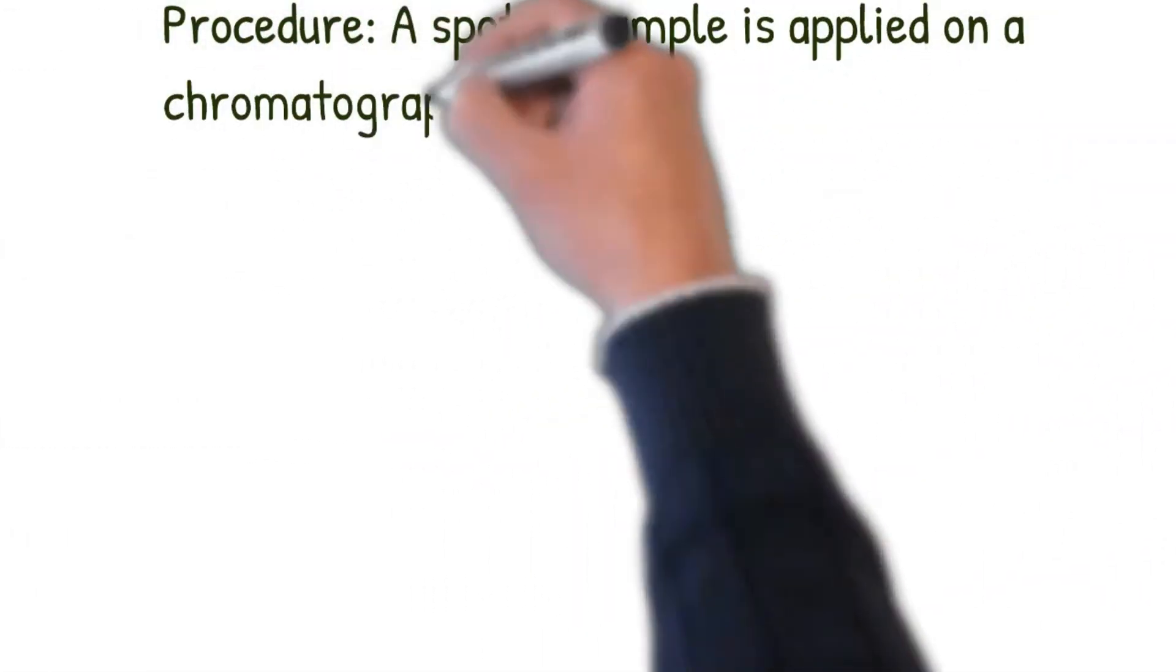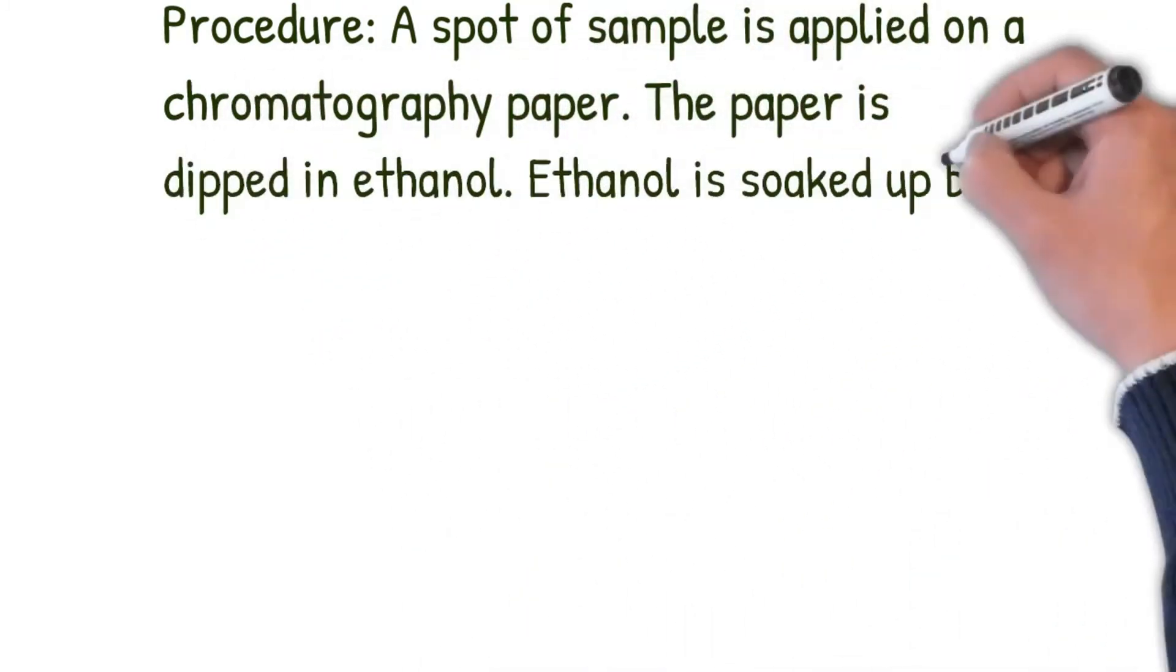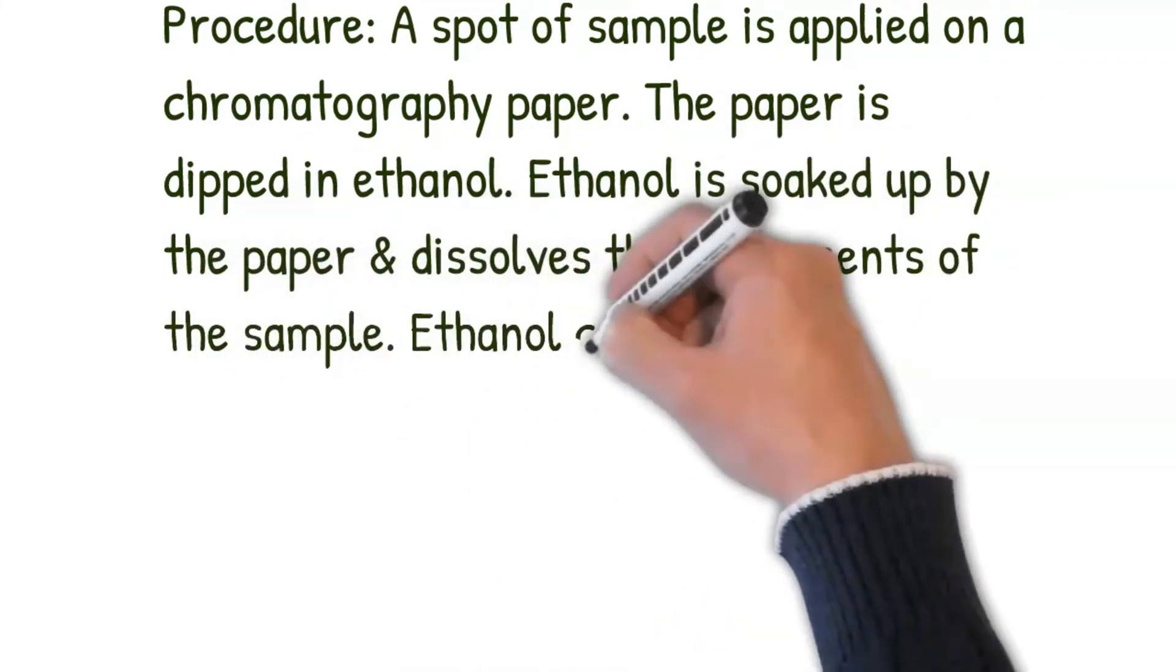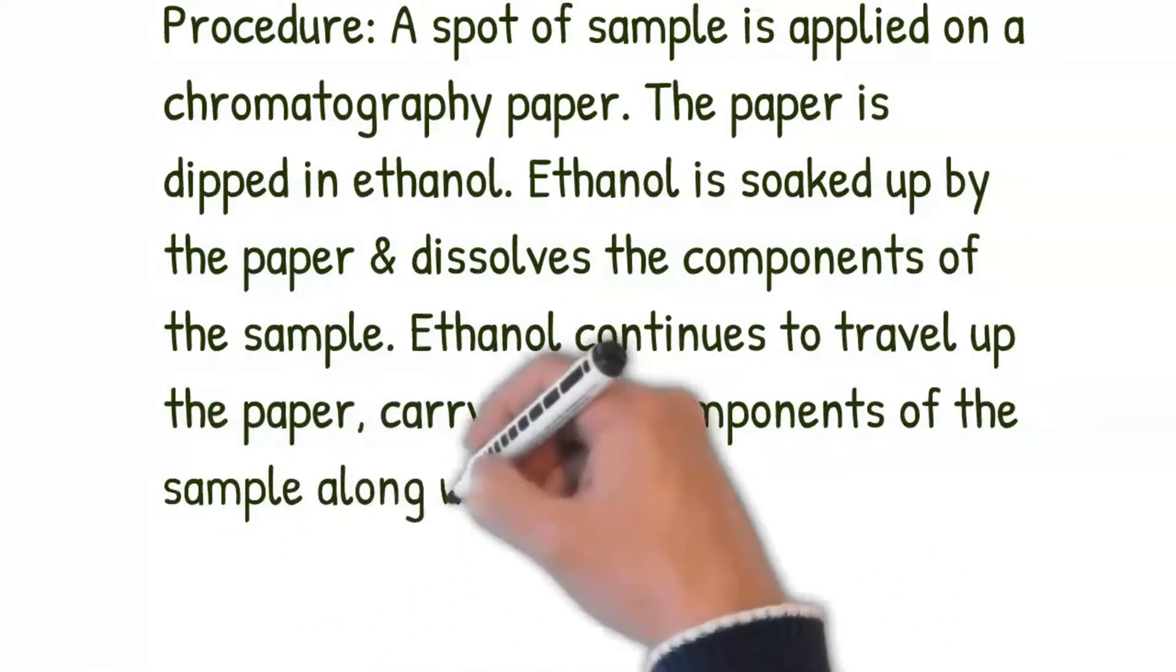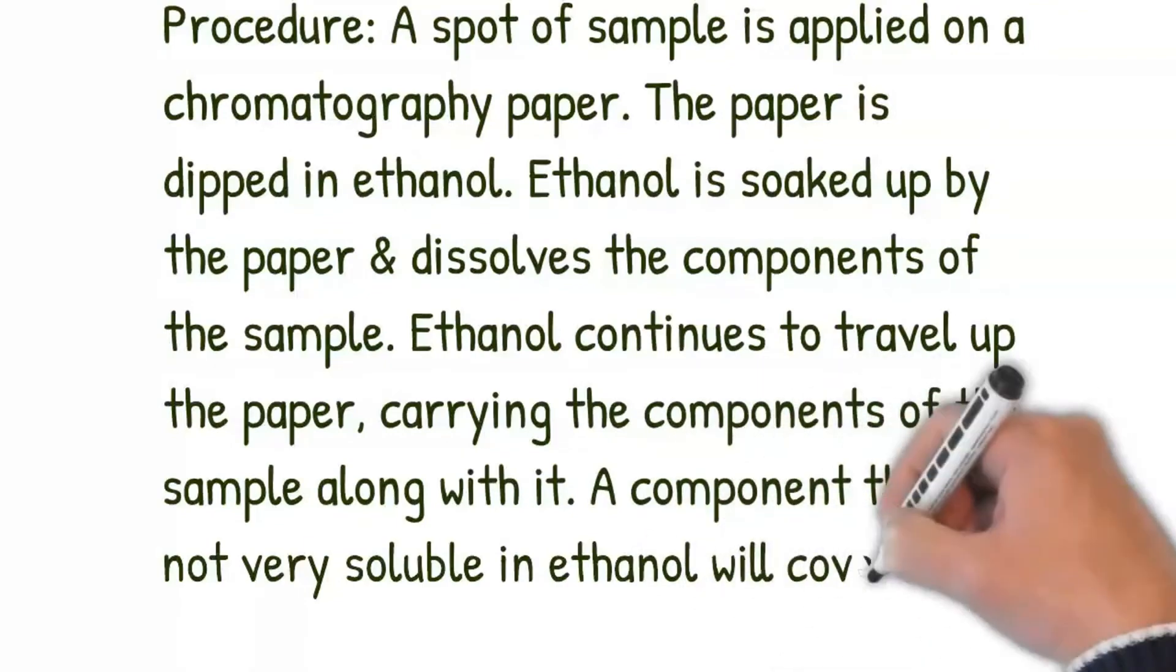A spot of sample is applied on a chromatography paper. The paper is dipped in ethanol. Ethanol is soaked up by the paper and dissolves the components of the sample. Ethanol continues to travel up the paper carrying the components of the sample along with it. A component that is not very soluble in ethanol will cover small distance on paper.